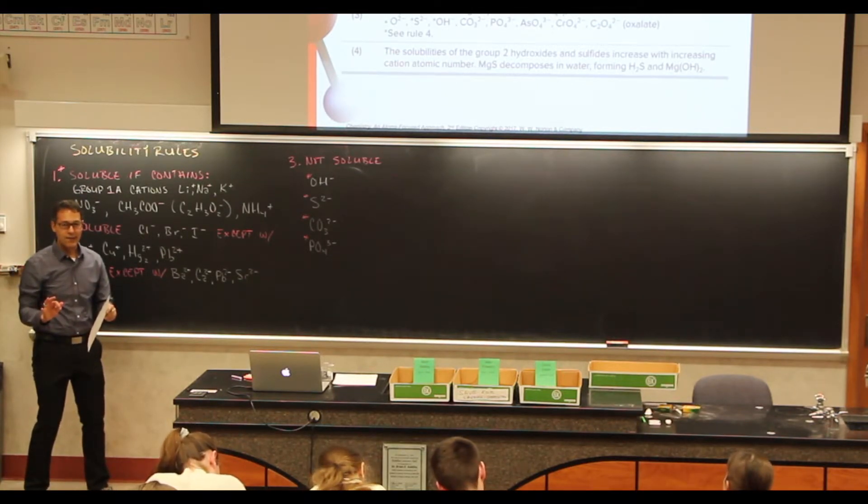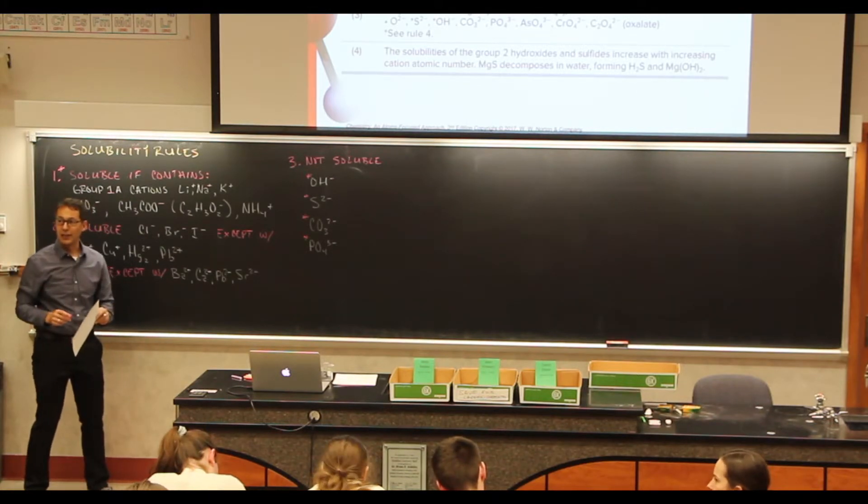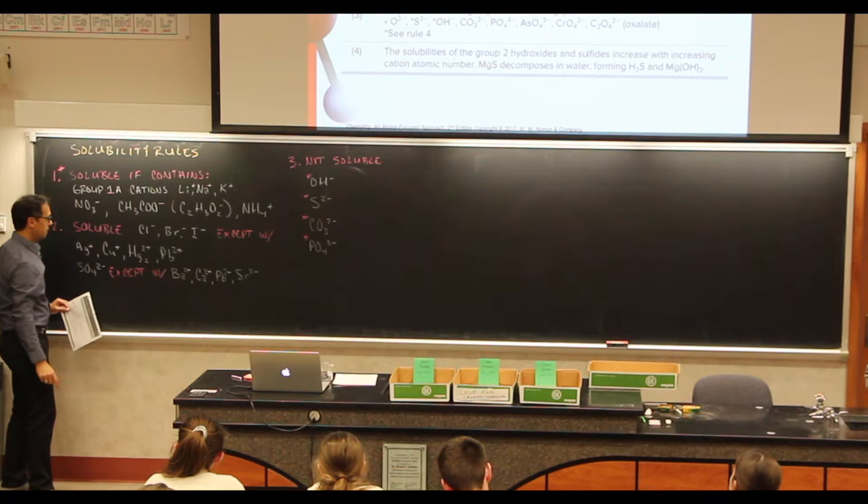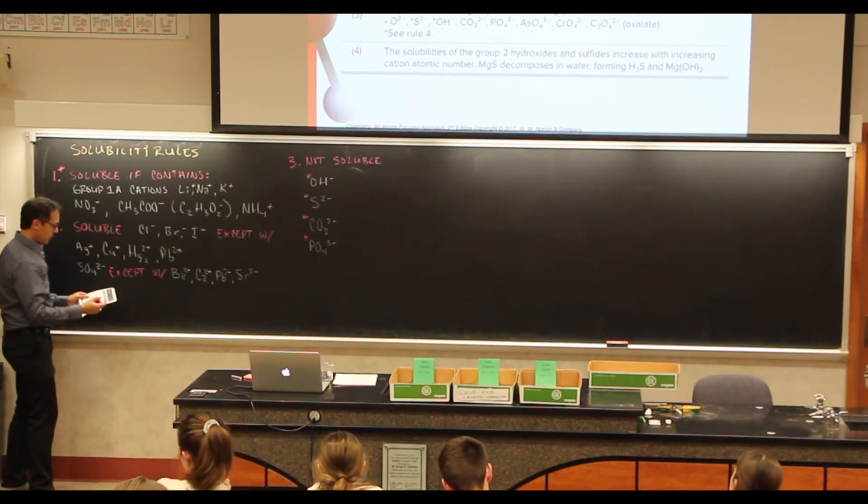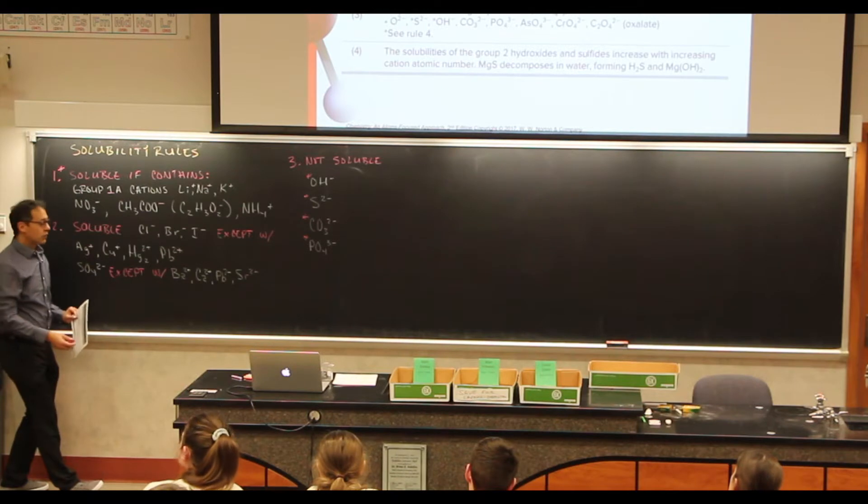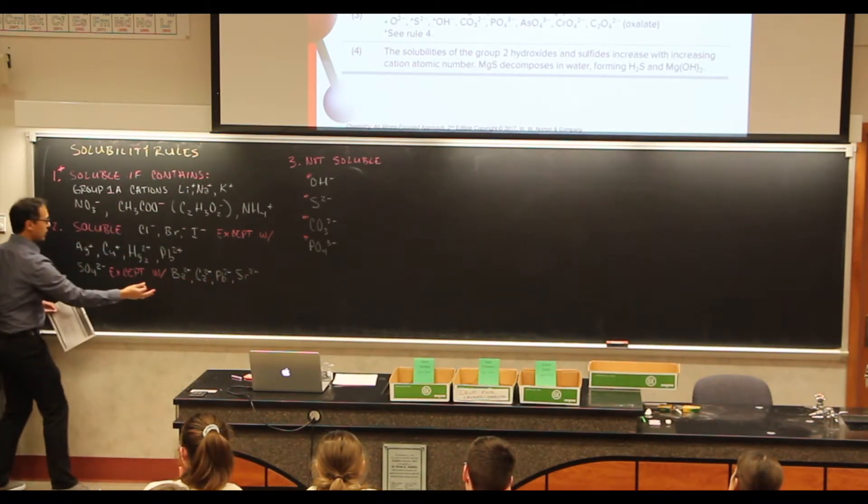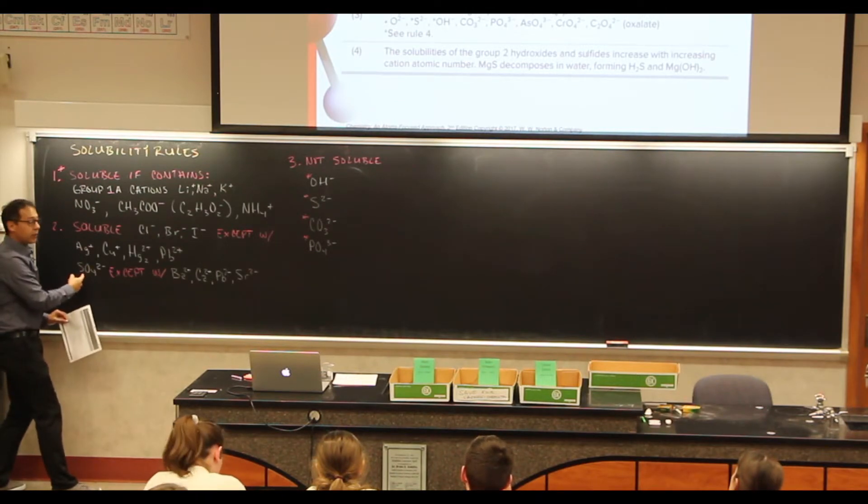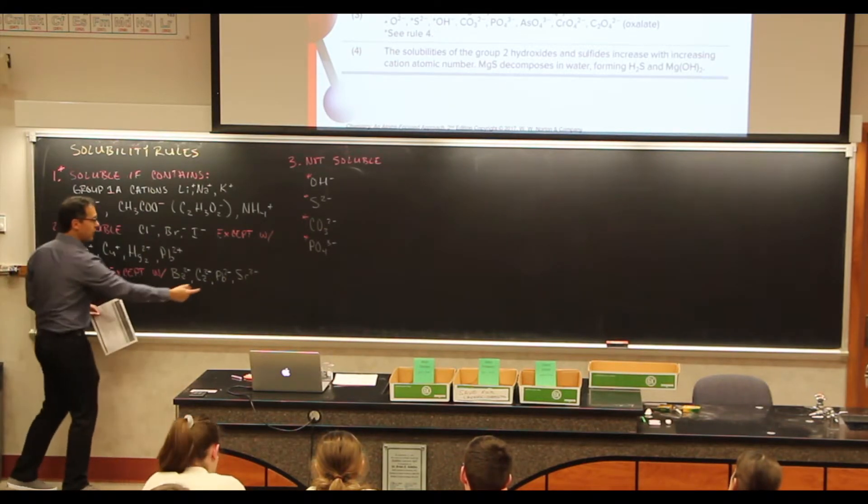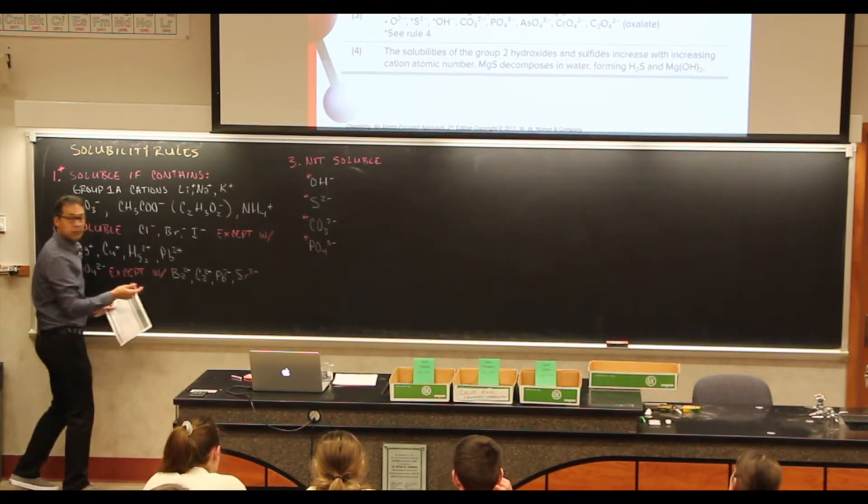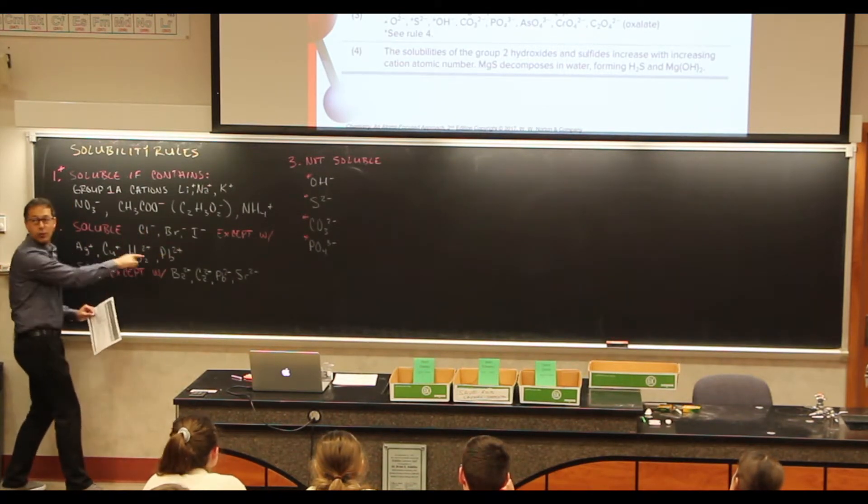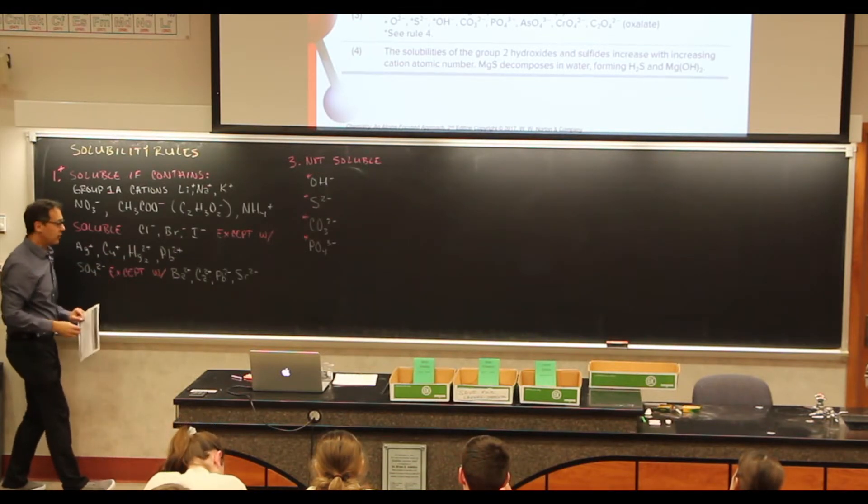Yes, sir. If you have barium combined with this. So yes, that would be soluble. So barium, calcium, lead, strontium, these are the exceptions for sulfate, but not the exceptions for chlorine, bromine, or iodine. Yep. So based off of that, if you had barium chloride. Barium chloride would be soluble because chloride is soluble except with these and barium is not one of those. Excellent.